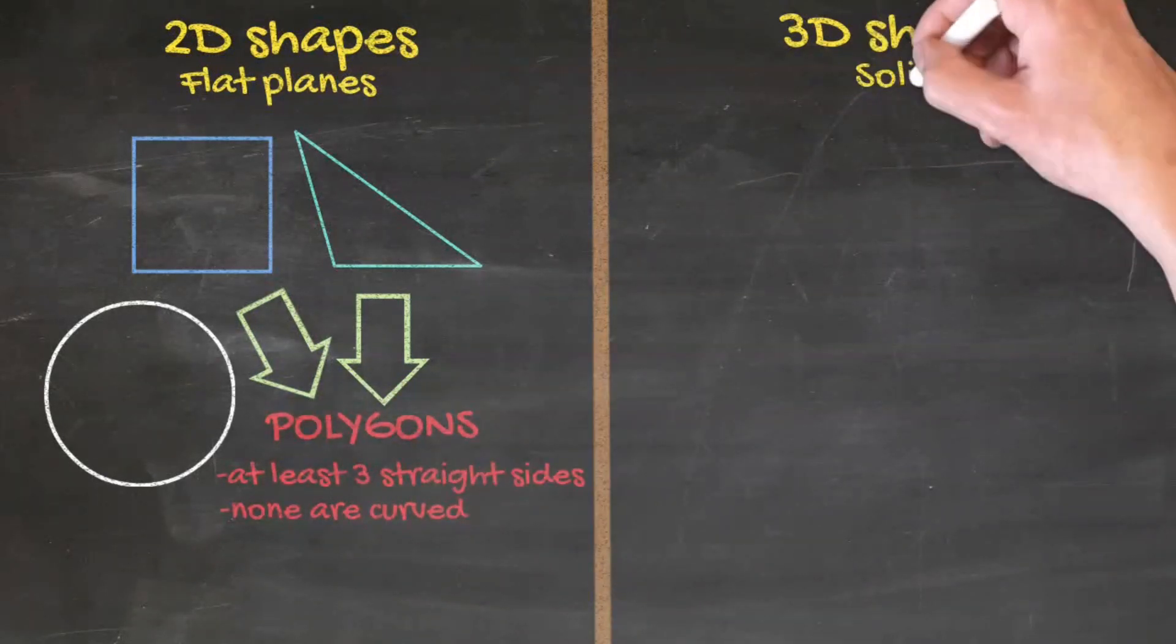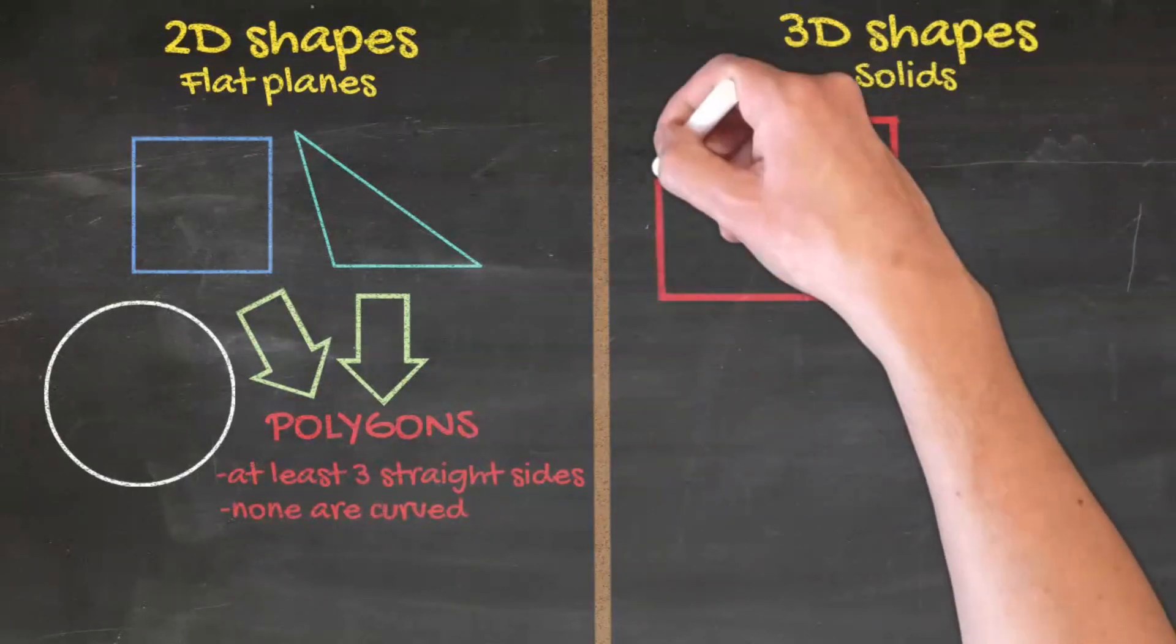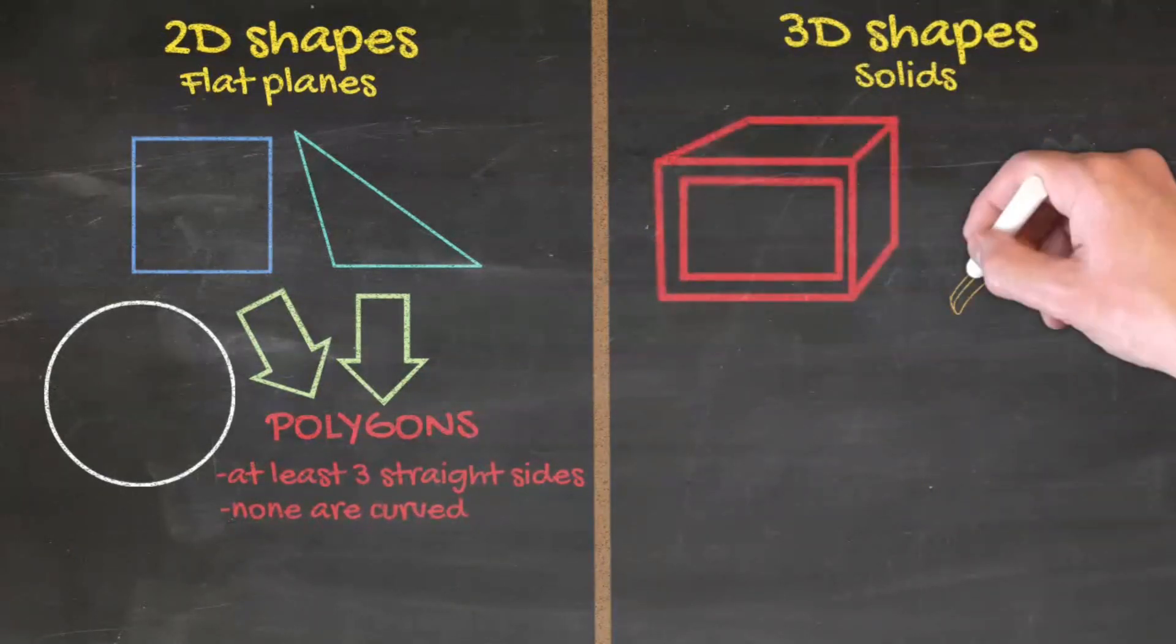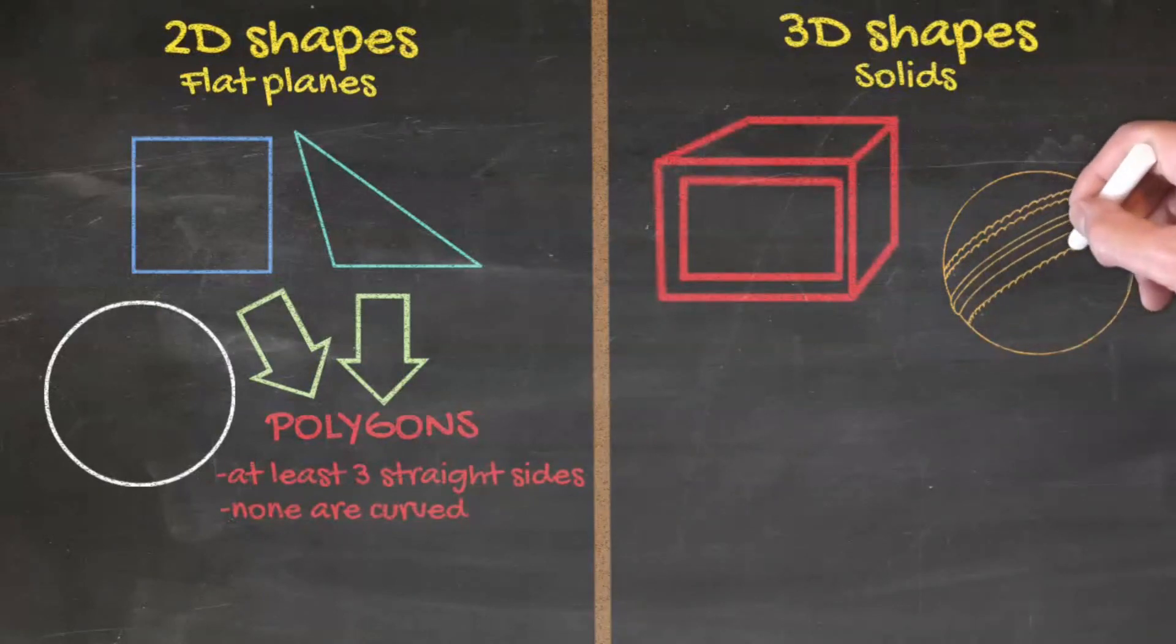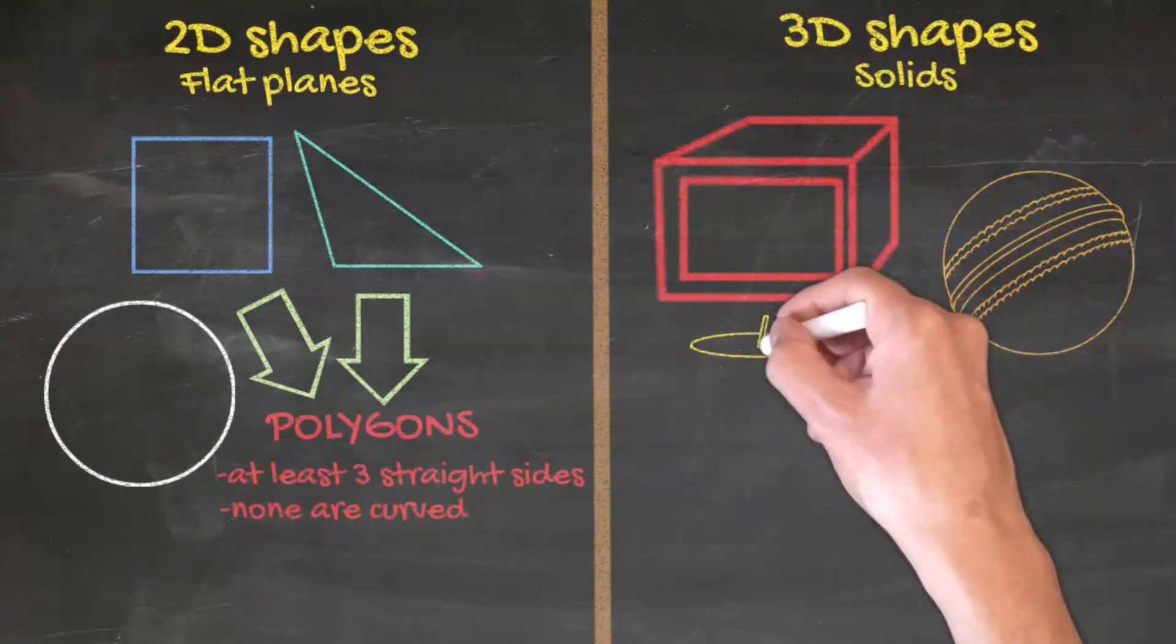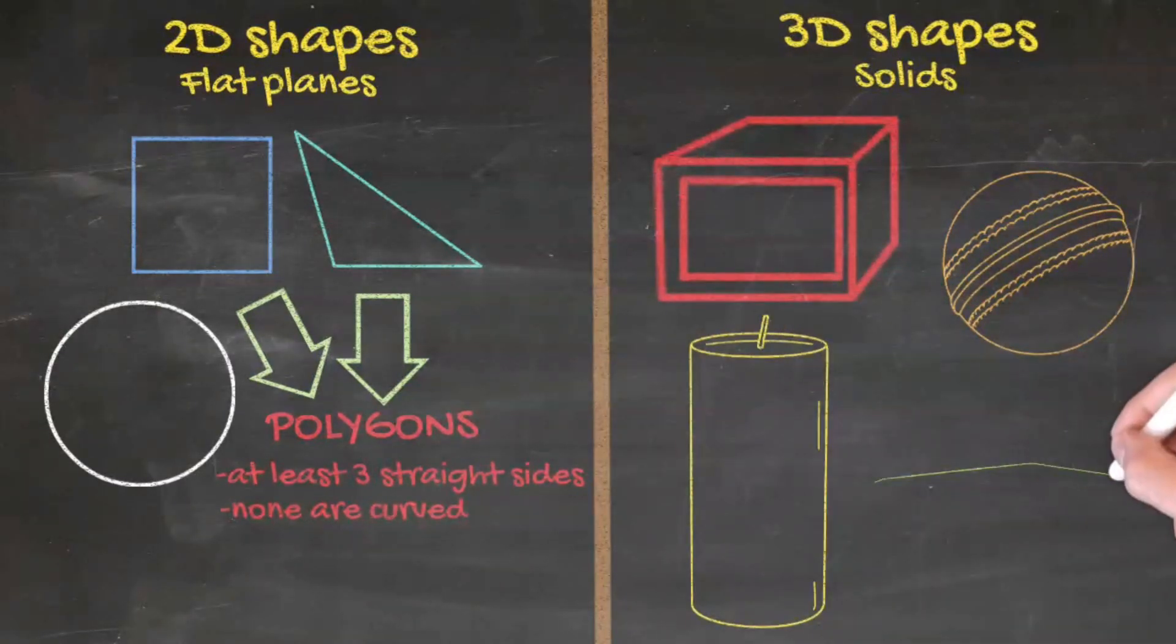3D shapes are also called solids. Some examples include this cuboid, this sphere, and just about any everyday object in your life.